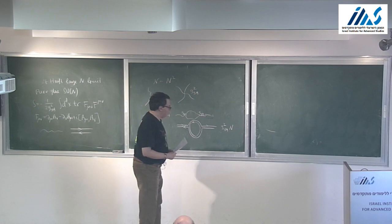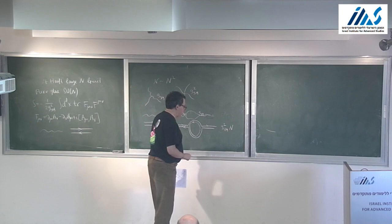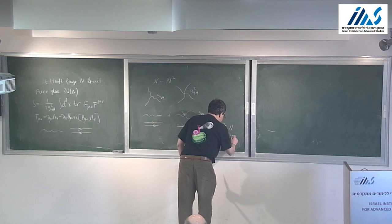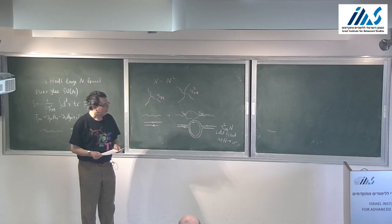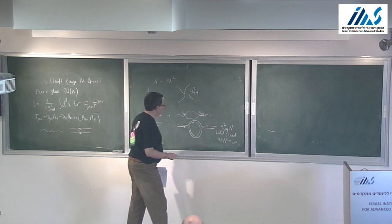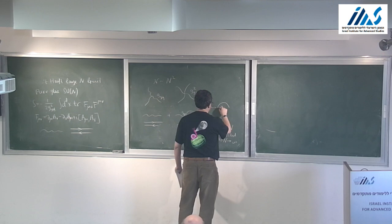You immediately realize that to have a smooth large-N limit, g_{YM}² N must be held fixed as N goes to infinity.